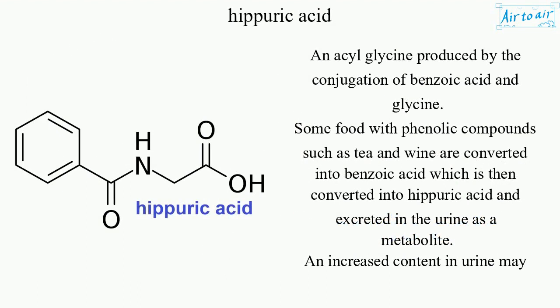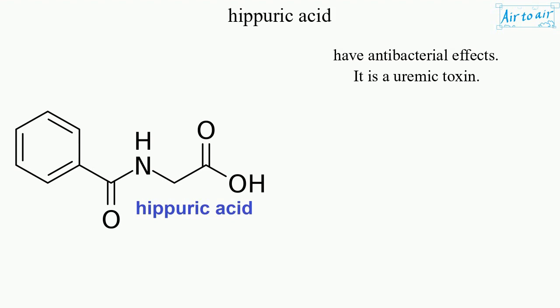Hippuric acid is an acylglycine produced by the conjugation of benzoic acid and glycine. Some foods with phenolic compounds, such as tea and wine, are converted into benzoic acid, which is then converted into hippuric acid and excreted in the urine as a metabolite. An increased content in urine may have antibacterial effects. It is a uremic toxin.